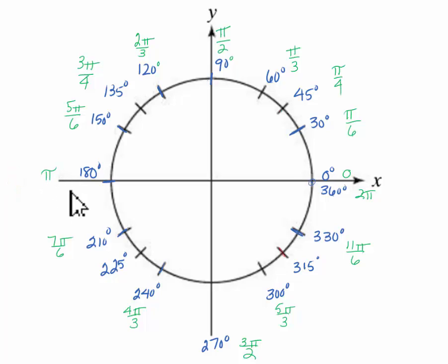From 4 pi over 4, we'd go to 225, which is 5 pi over 4. And from 5 pi over 4, we'd go to 6 pi over 4, which is at 270, and 6 pi over 4 does reduce to 3 pi over 2. Then we'd go to 7 pi over 4 at 315, and then from 315 up to 360, we'd be at 8 pi over 4, and 8 pi over 4 is the same thing as 2 pi.